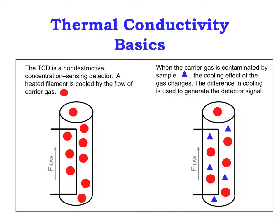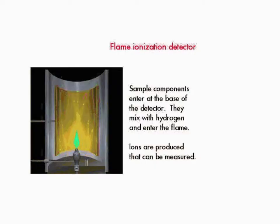This diagram illustrates the TCD process. The red dots represent the molecules of carrier gas. The blue triangles are molecules of a compound carried by the carrier gas. Compound molecules are coming in contact with the heated filament and changing its resistance. A flame ionization detector, or FID, is more sensitive than a TCD, but destroys the sample since it uses a flame to convert the molecules into detectable ions. These detectors are more expensive and are not used in any of our instruments.